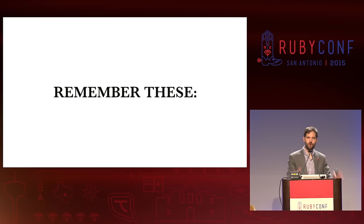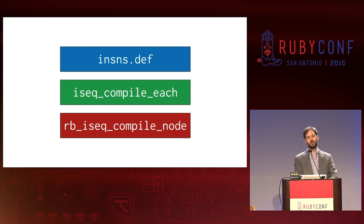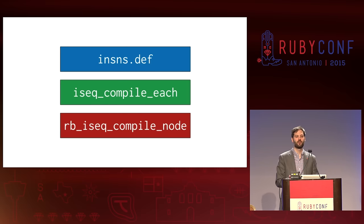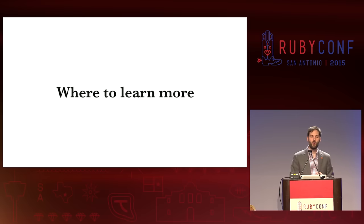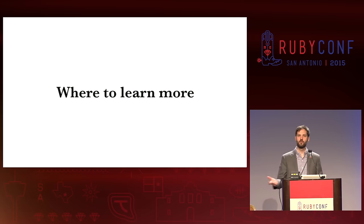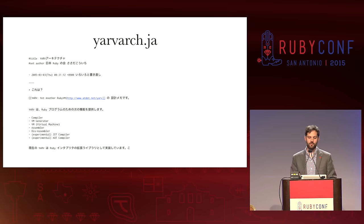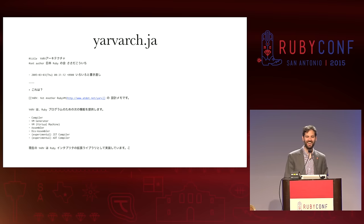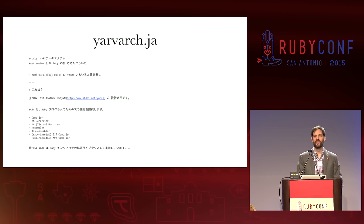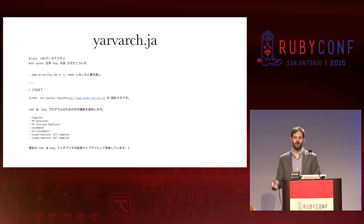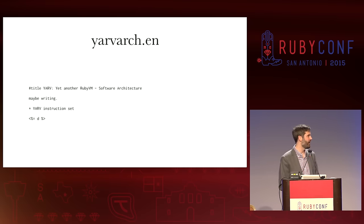So, remember these things. If you're going to remember anything from this talk, go look at insns.def, iseq_compile_each, and iseq_compile_node. If you want to know more, there's actually a YARV architecture document checked into Ruby itself — it's called yarvarch.ja. Unfortunately, it's written in Japanese. The good news is that I can read Japanese. But then I found there was actually an English version — yarvarch.ja.ja. And this is the entire contents of that file.